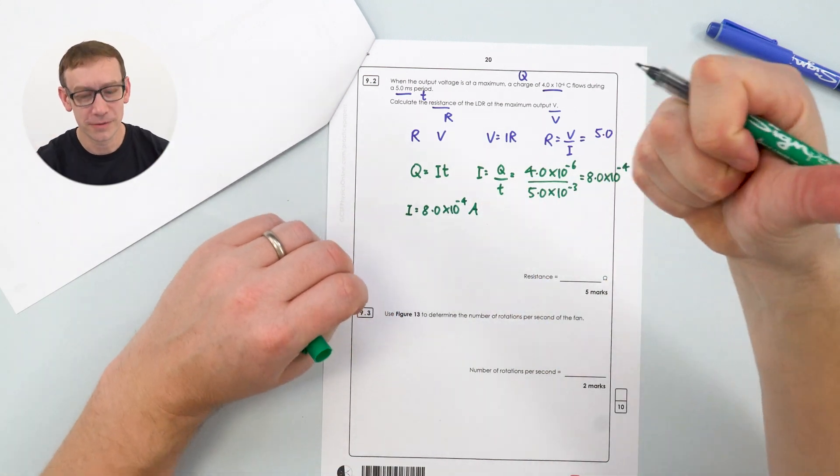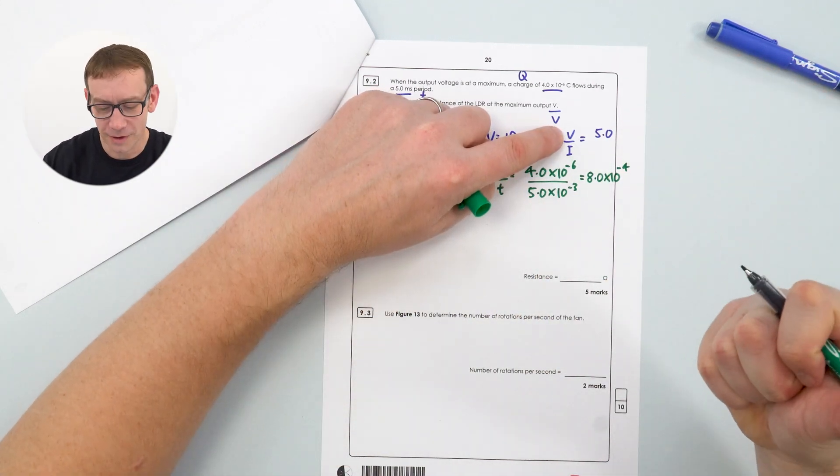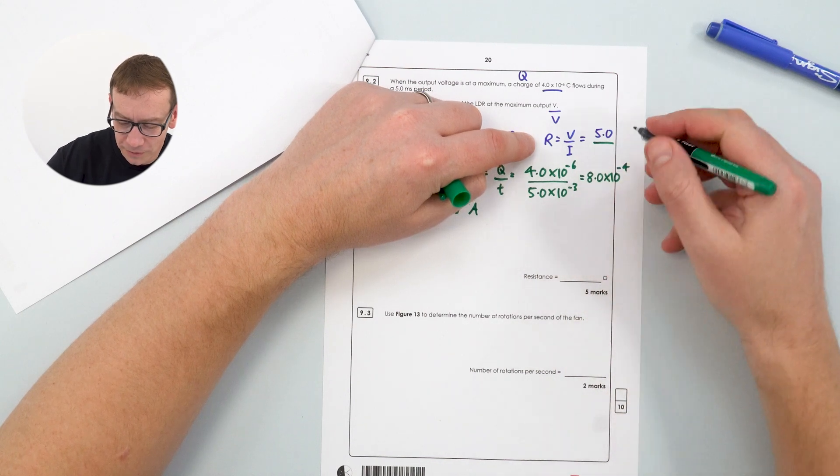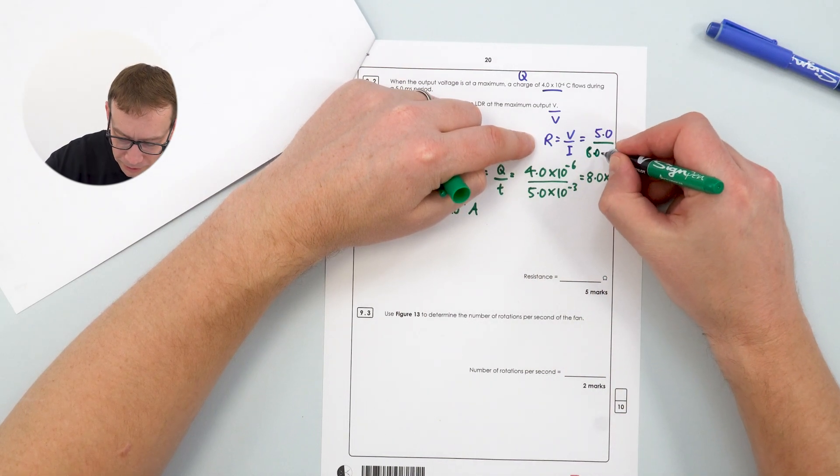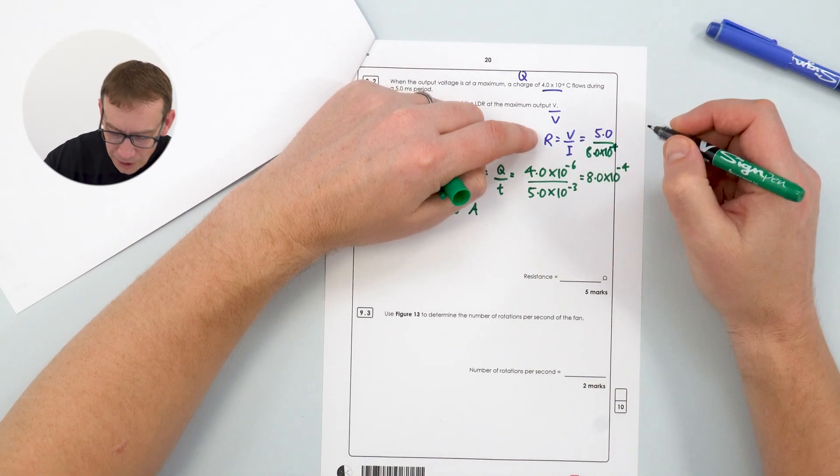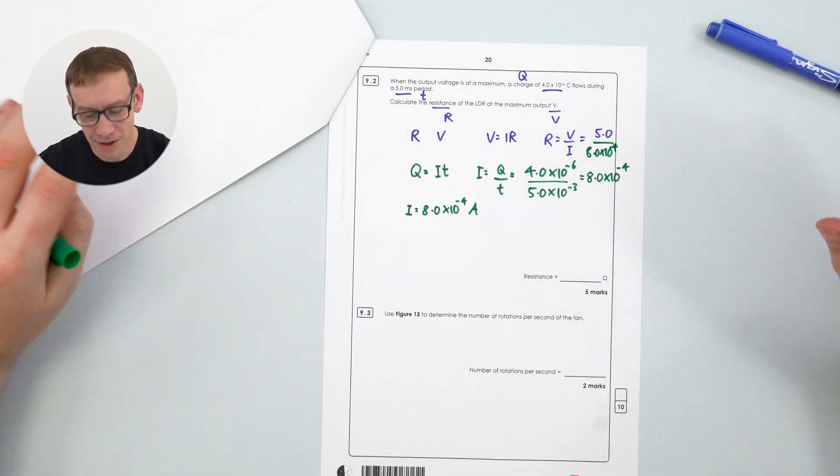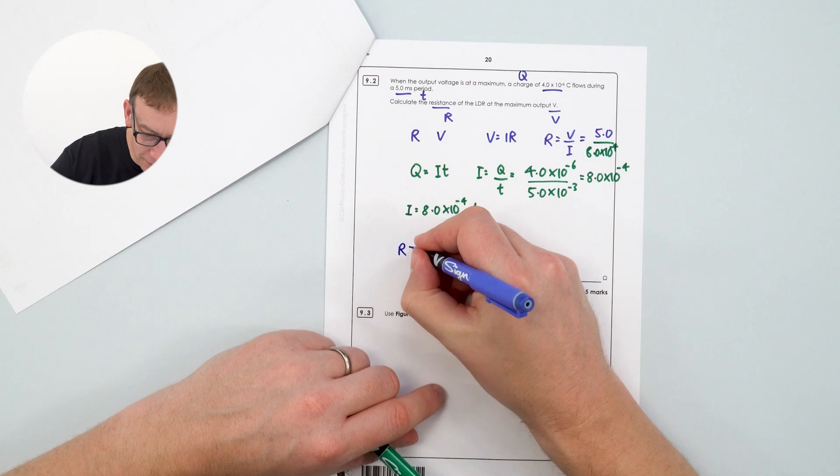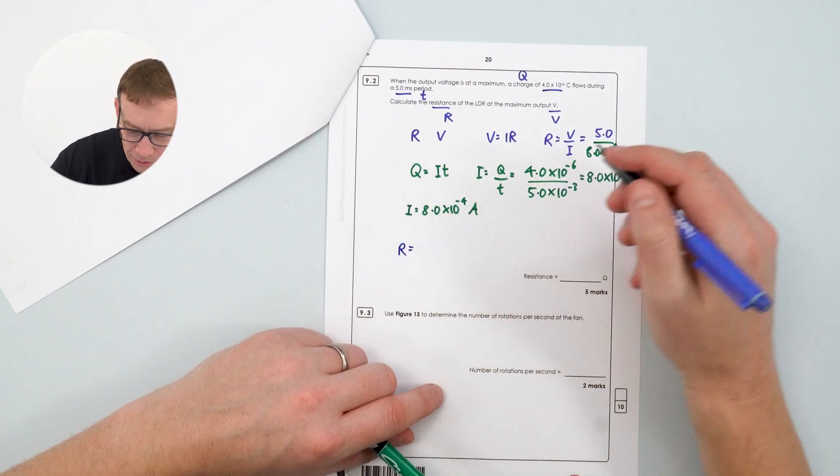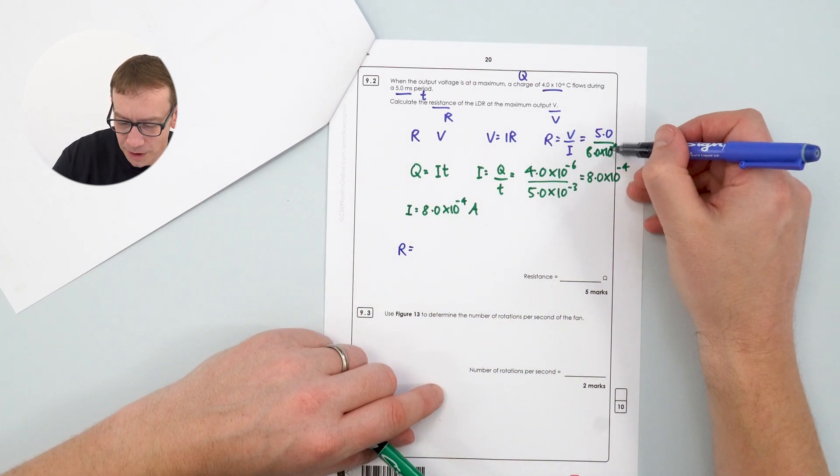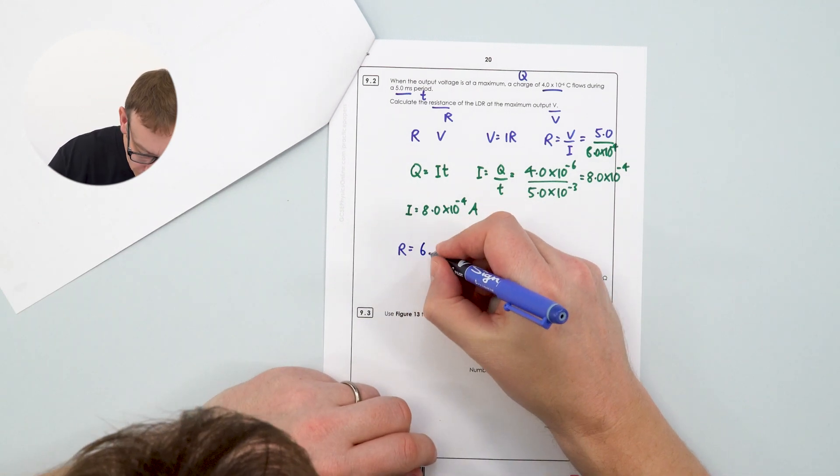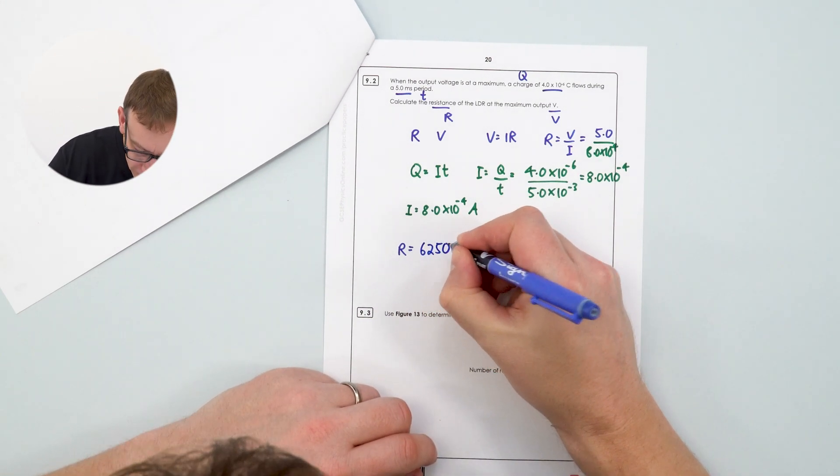Okay so we know the current, we know the potential difference from the graph, and therefore we can work out R. So this is going to be equal to V over I, which is 5, divided by 8.0 times 10 to the minus 4. Now I suspect I probably could work that out if I had enough time, but again I'd be using my calculator to then say that R is equal to a small number, divided by a really really small number, which is going to give us a big number, which is equal to 6, 2, 5, 0.